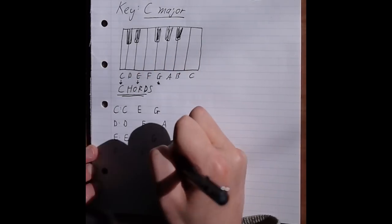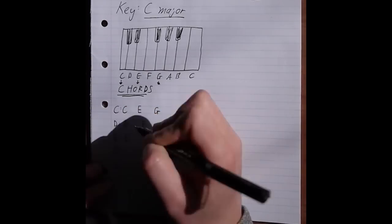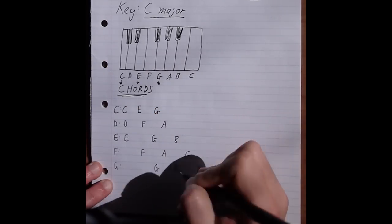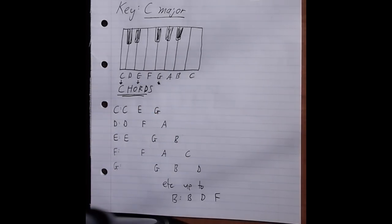E will be E, G, B. F will be F, A, C, etc. Right up to B, which is B, D, F.